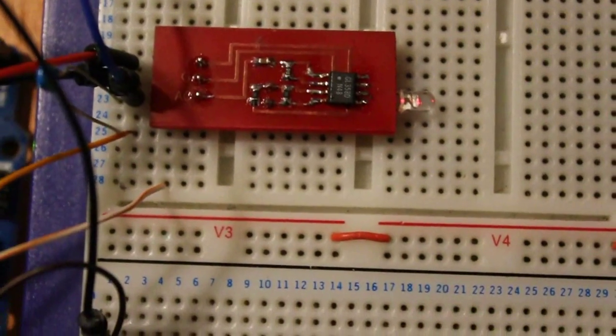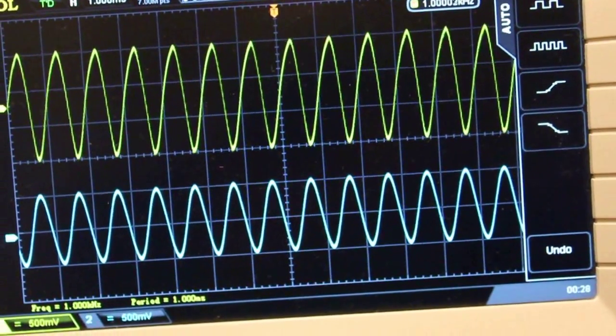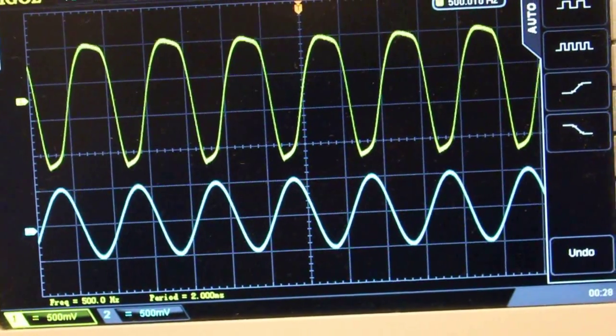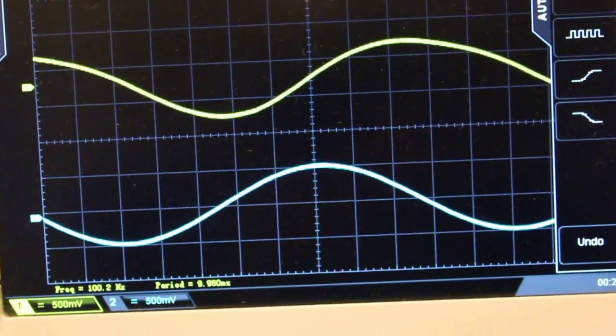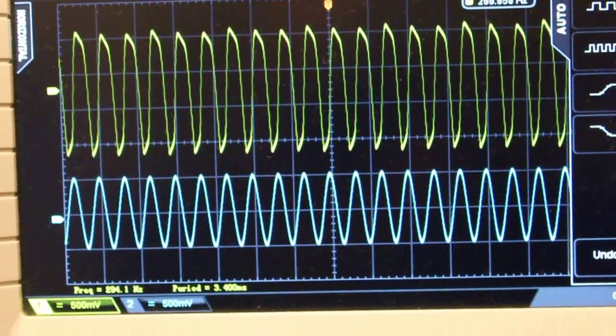Here I'm putting a sine wave from a function generator into the system. The blue trace is the input and the yellow trace is the output.